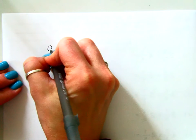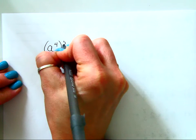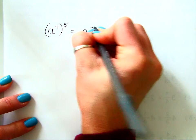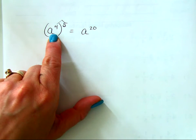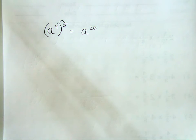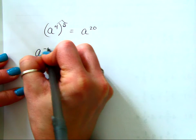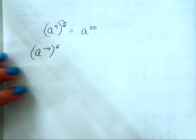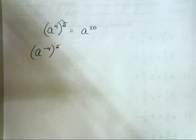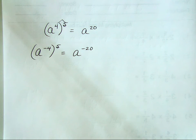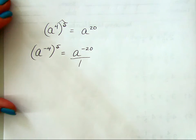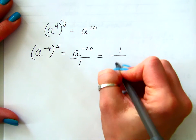So now let's get back to power of a power. Remember a to the fourth to the fifth power with no negative exponents — you just get a to the 20th. Now let's make it a to the negative fourth to the fifth power. That gives a to the negative 20th, which becomes 1 over a to the positive 20th.